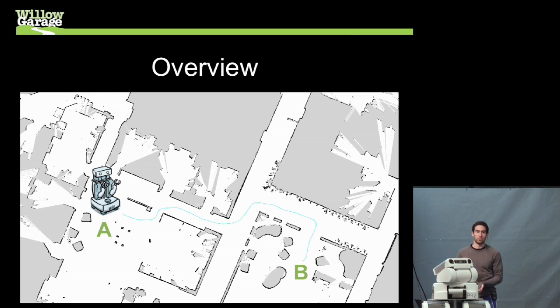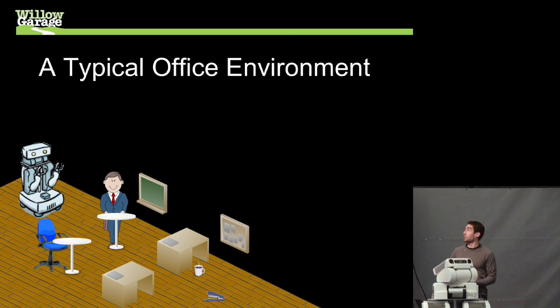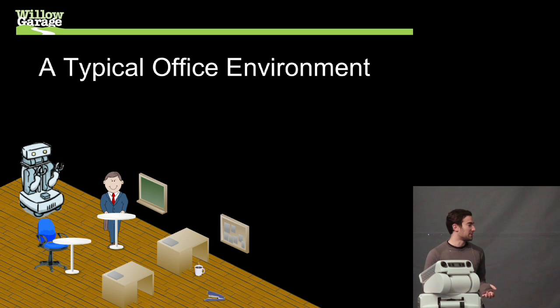So what's the point? We want the robot to get from point A to B in an office environment over and over again in a robust and reliable manner. A typical office environment might look something like this.